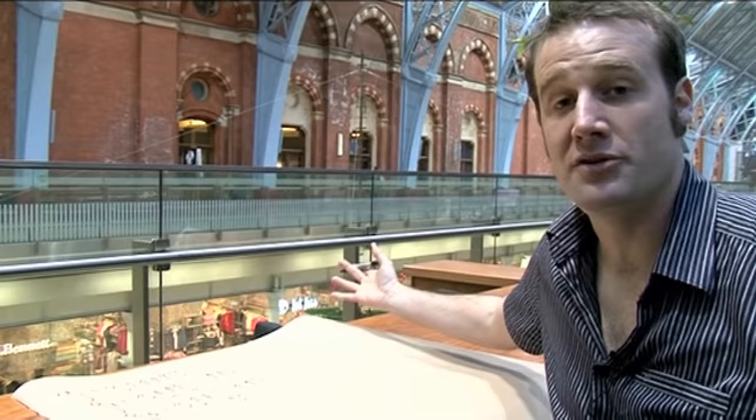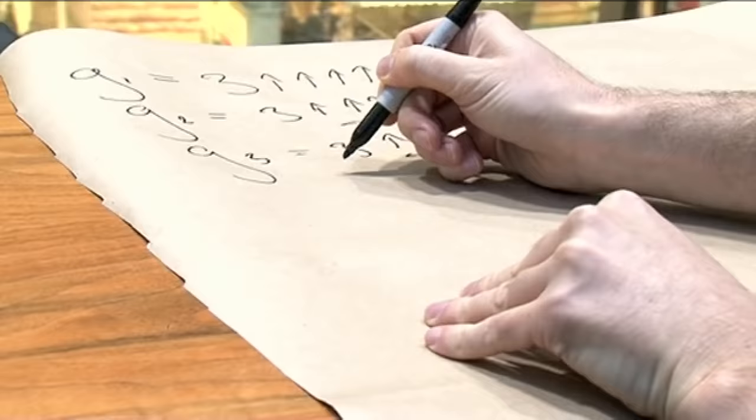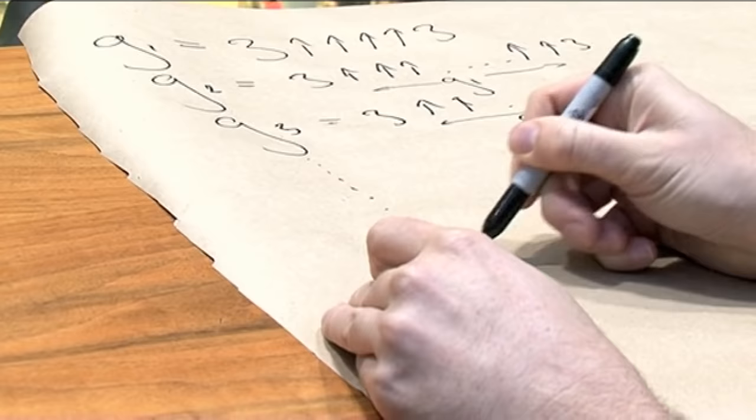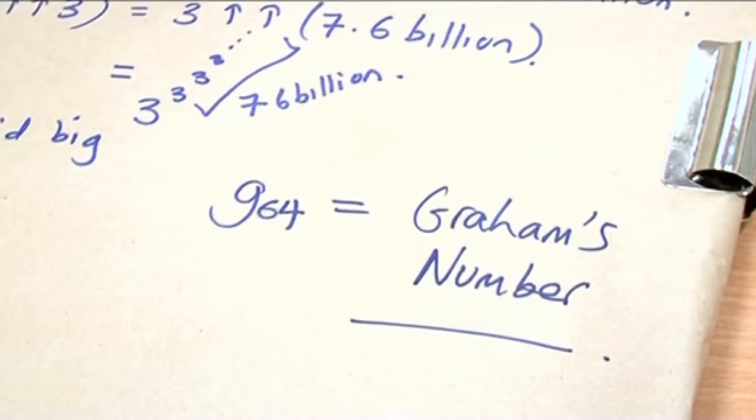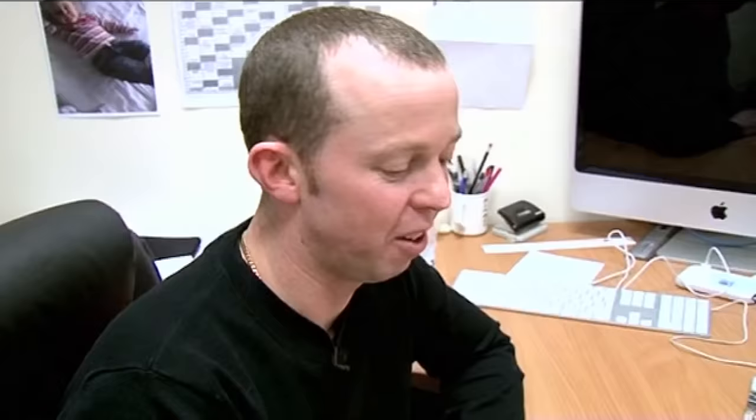And then the thing is, you're getting numbers which are beyond arrow notation, right? This is just, ah. And then you keep going, right? And Graham's number is if you keep doing this. You keep doing G's, right? You go all the way down to G64 equals Graham's number. So it's just unimaginably big. I mean, literally. That's Graham's number.